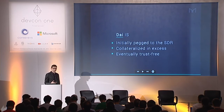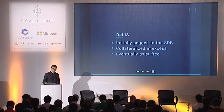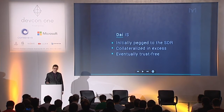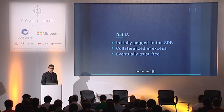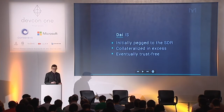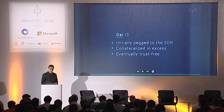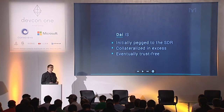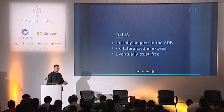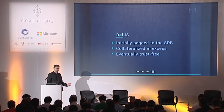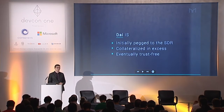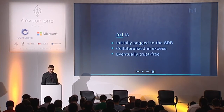The properties of the DAI that make it awesome are: it's initially pegged to the SDR, but it's deflationary. It's collateralized in excess, so there is more value locked up backing the DAI at all times than the total value of the DAI. And it's eventually trust-free, which means that it uses the most current trust-free mechanisms available to get data feeds and to do the pegging mechanics that is available at the time.